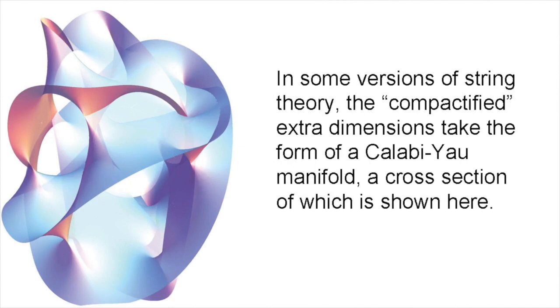A version called Super String Theory calls for a total of 10 dimensions. An extension of this known as M Theory involves 11, while another scheme by the name of Bosonic String Theory demands 26. All of these additional dimensions are said to be compactified, meaning that they are significant only on a fantastically small scale.